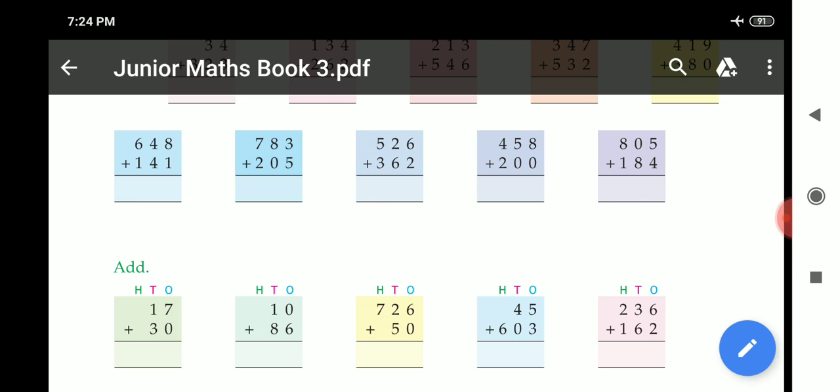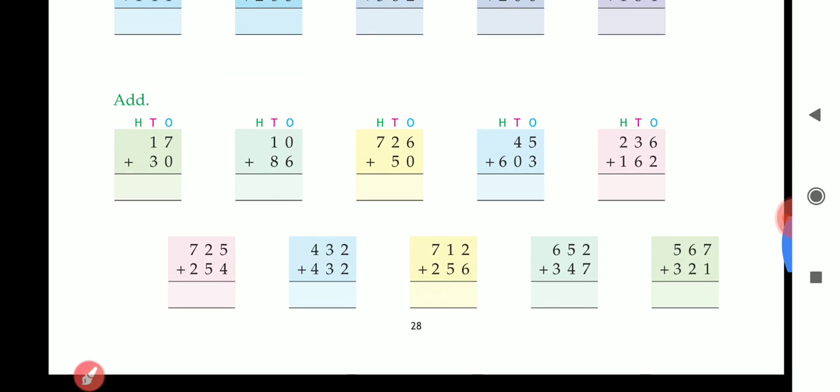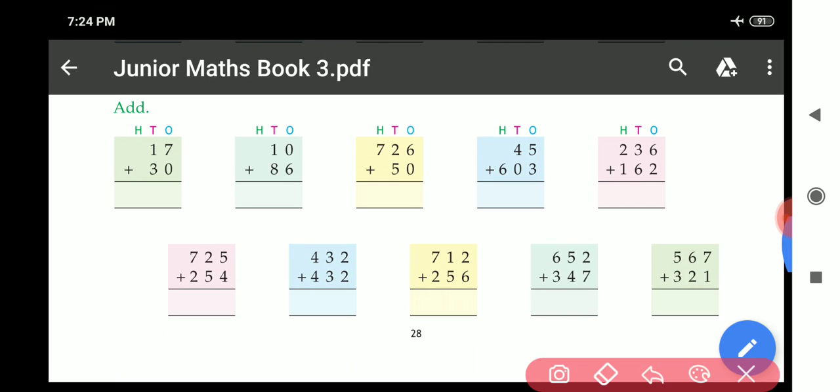Now move to next part. Now come to next part. 7 plus 0, 7. 3 plus 1, 9.